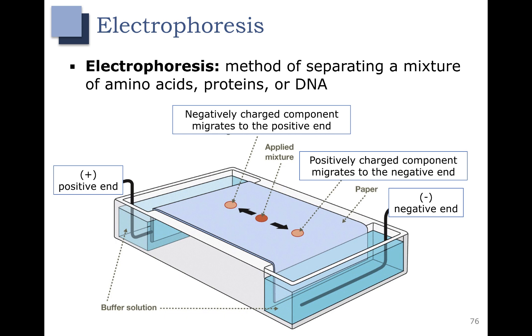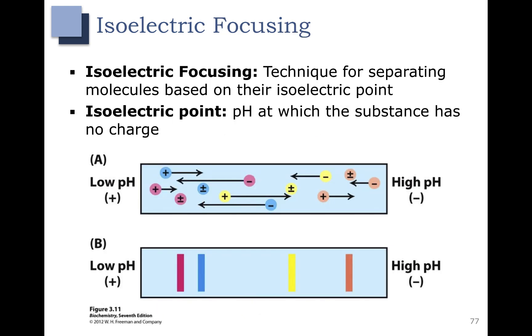And if you have a protein, which is a chain of amino acids, again a positively charged protein would migrate towards the negative end of an electrophoresis gel. One very important example of electrophoresis is isoelectric focusing.